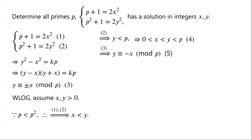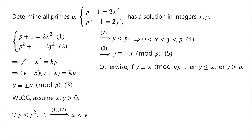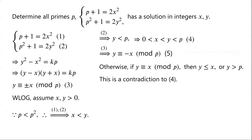So we have 0 < x < y < p. We claim y is congruent to negative x modulo p. If y were congruent to x modulo p, then letting y equal mp plus x, if m is less than or equal to 0 then y is less than or equal to x, and if m is greater than 0 then y is greater than p — both contradicting the inequalities.